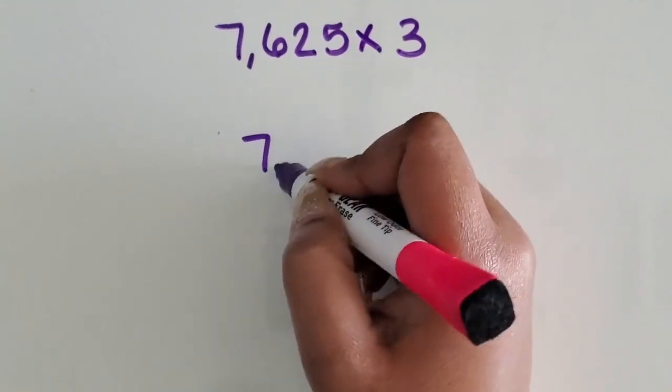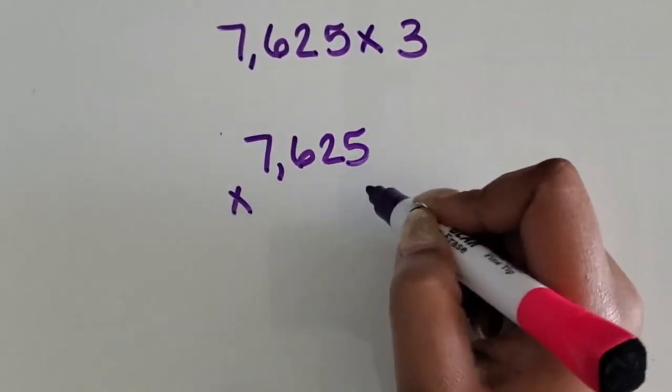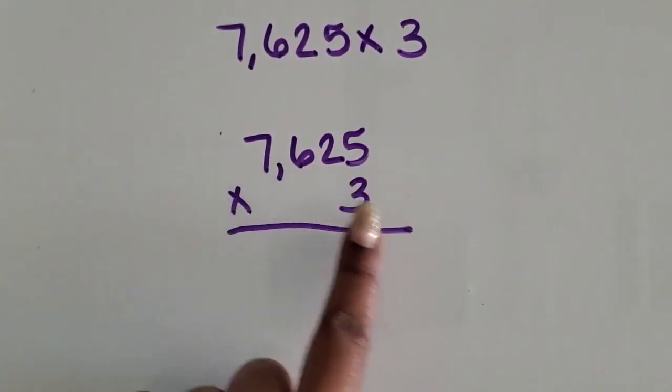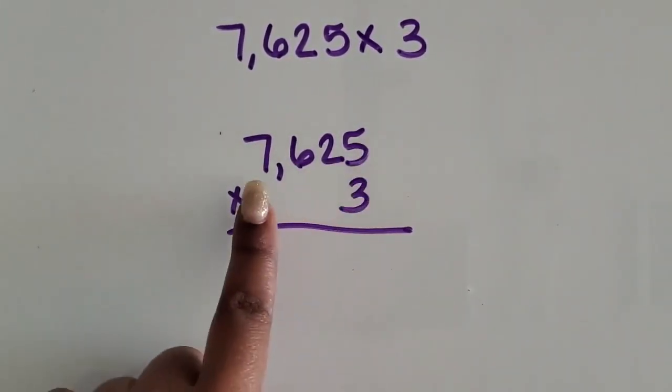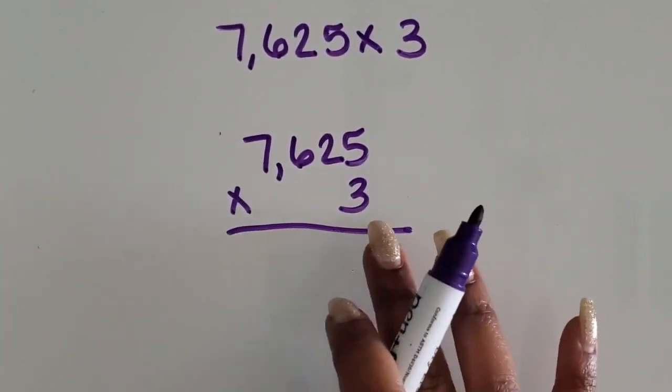We're going to line the numbers up vertically. Then again, you want students to write the value of each of the digits out and then multiply it by your one-digit number.